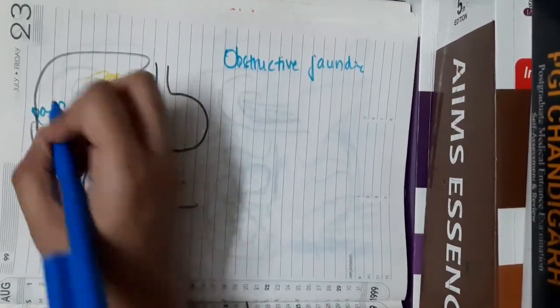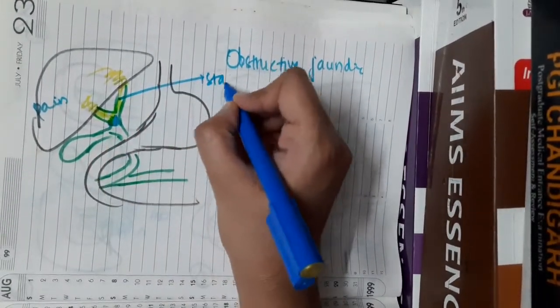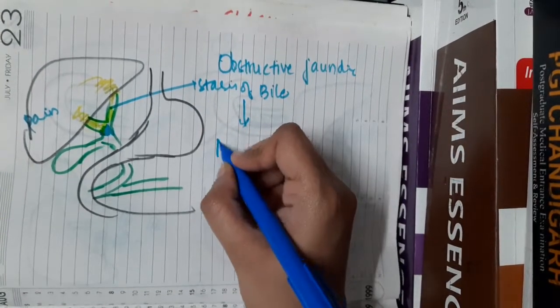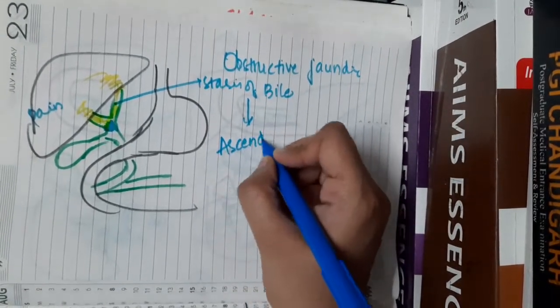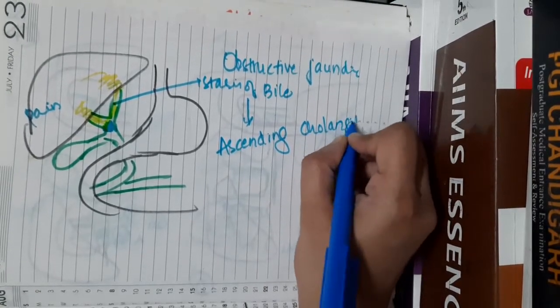Also, there is stasis of bile in the liver and this stasis will result in infection causing ascending cholangitis.